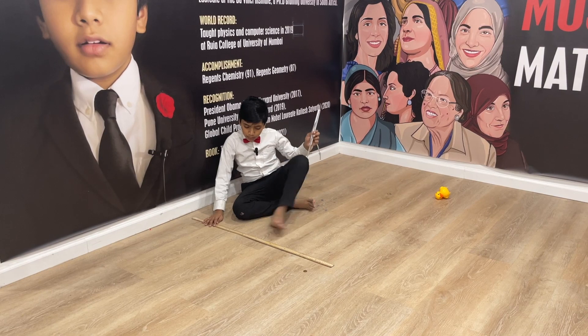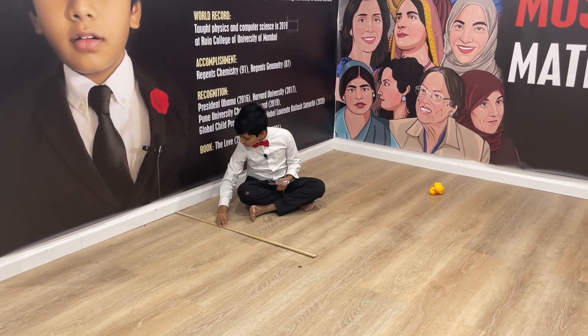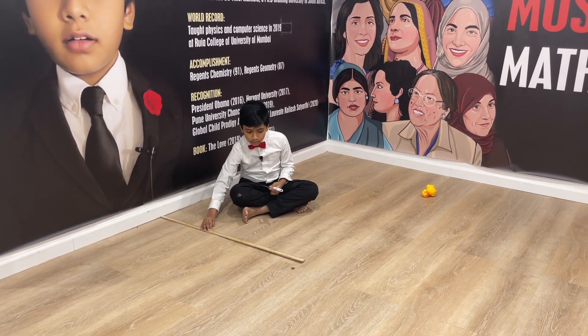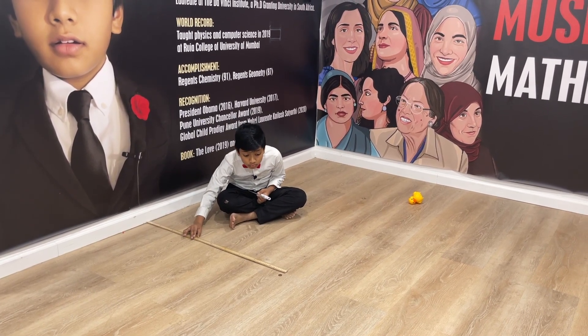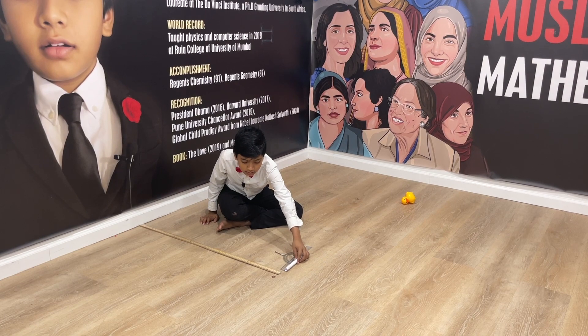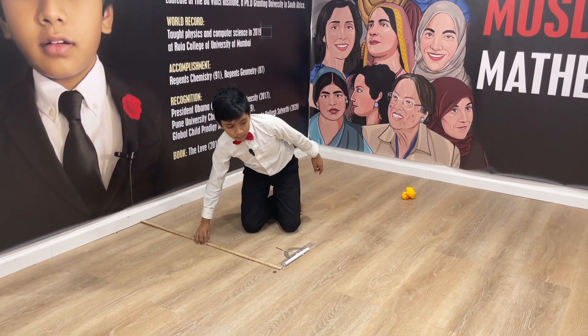Alright, so let's do it. Let's put this against the wall, and now, okay, that is one meter, so let's just put the astrolabe there to mark it.